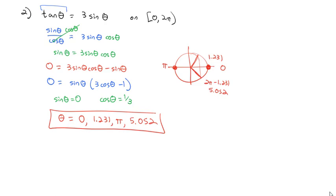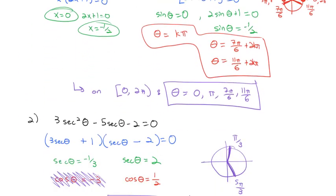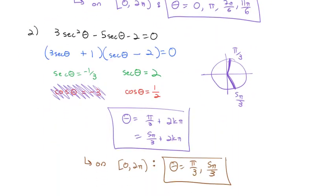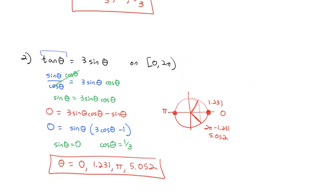So our solutions are theta equals 0, 1.231, pi, and 5.052 radians. Today we reviewed trig identities, how factoring helps solve trig equations, and put it all together to solve with these properties. Practice as many of these as you can — the more you practice, the better you'll get. Let me know if you have any questions.